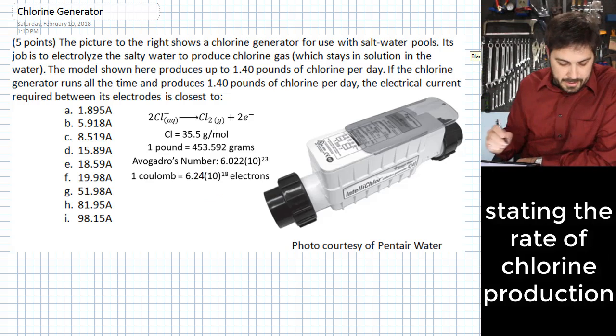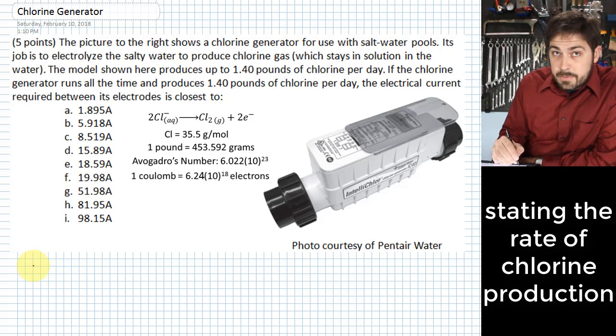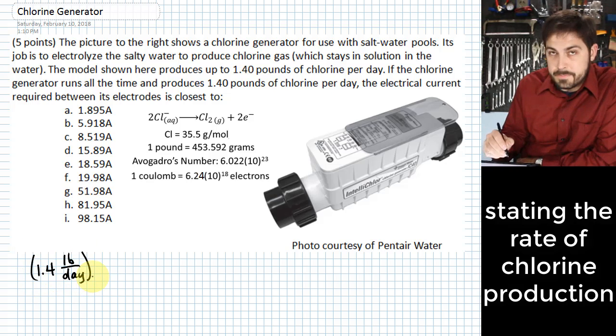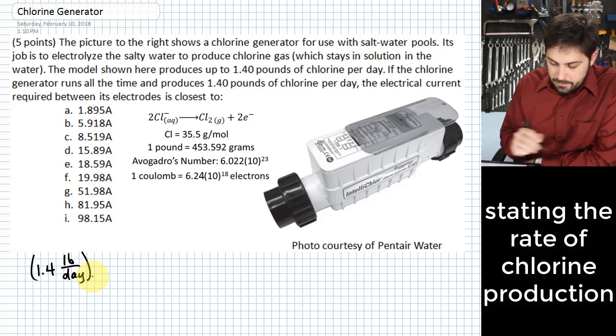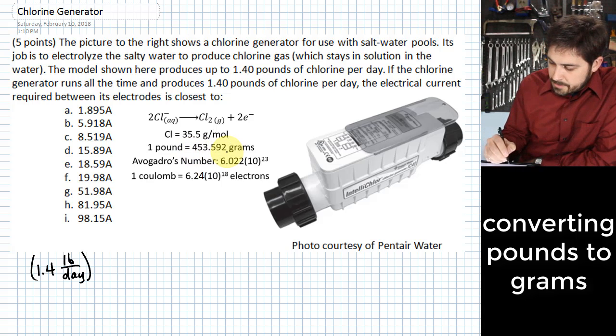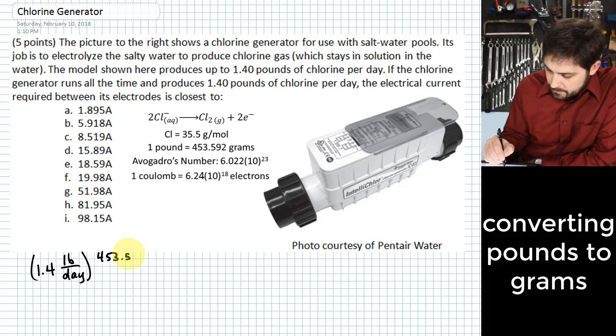And so here's what we do. We just see here that we're trying to produce 1.4 pounds of chlorine per day. And honestly, most of this problem kind of comes down to just doing a bunch of conversions. First thing we want to do is turn the pounds into grams. And the way we do that is with this 453.592 grams per pound.